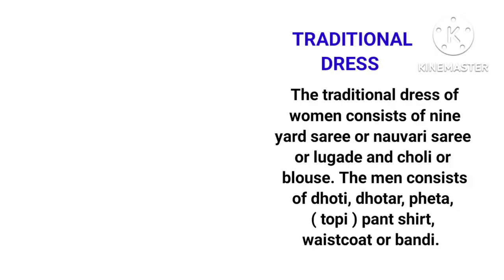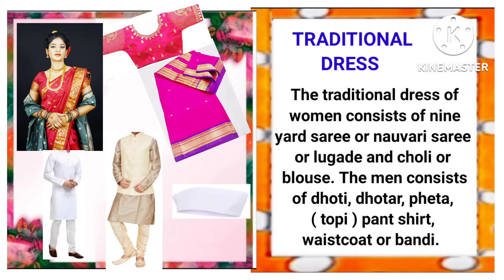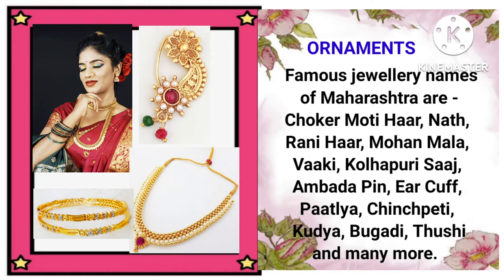Traditional dress: The traditional dress of women consists of nine yard saree or novari saree or lugadi and toli or blouse. The man consists of dhoti, dhotar, petha, topi, pen shirt, waist coat or bandhi. And here are some traditional dresses of Maharashtra state. Famous jewelry names of Maharashtra are Chokar Motihaar, Nat, Ranihaar, Mohanmala, Vaki, Kolhapuri Saj, Ampada Pin, Iyekaf, Patliya, Chinchpeti, Kudiya, Bugadi, Tushhi and many more. And here are some pictures of jewelries of Maharashtra state.